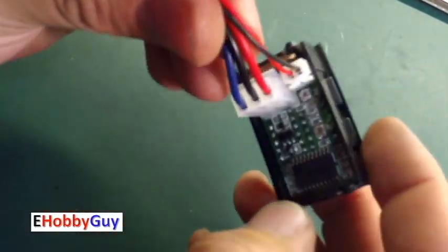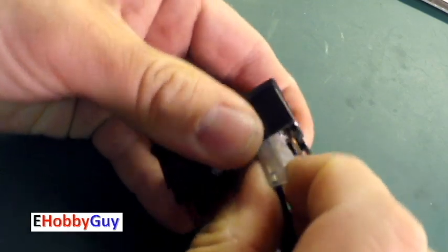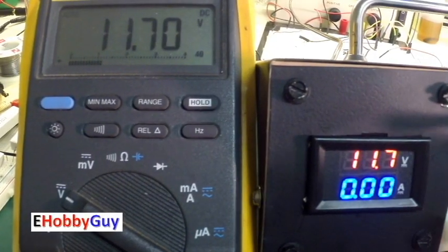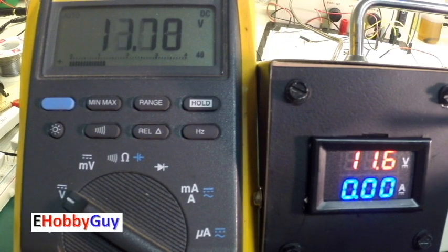Hello everyone. As you know, I am Paul, your eHobbyGuy. Today we're going to do an in-depth review of this voltmeter ammeter, very low cost, about three dollars from eBay.